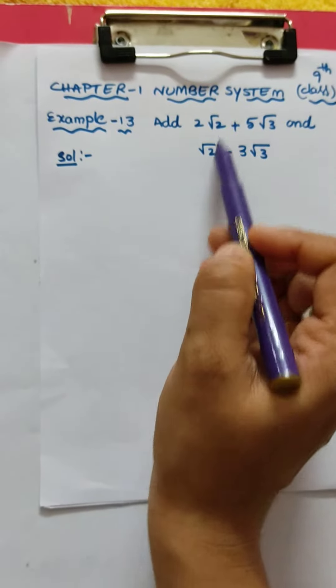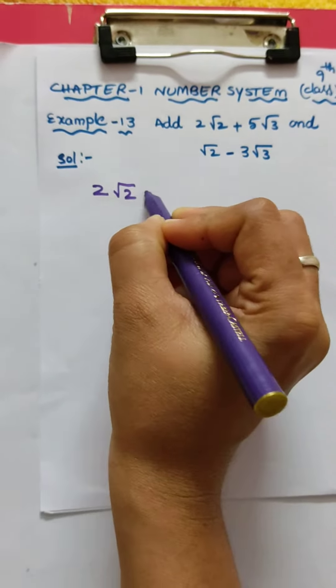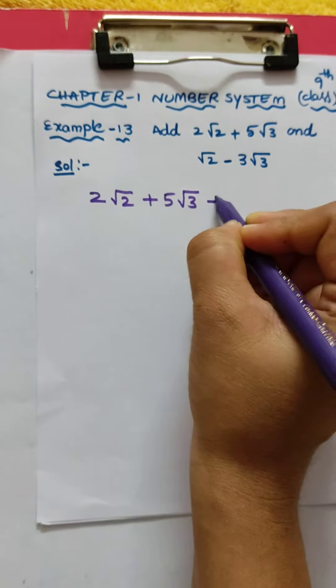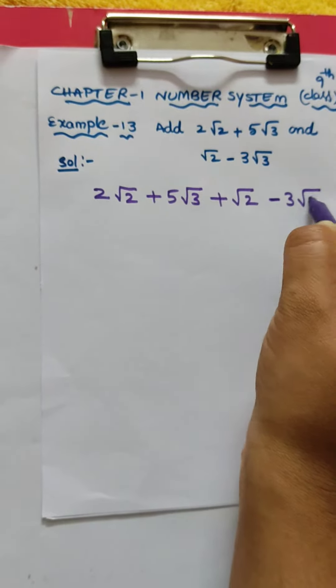Solution: We should add both, so 2√2 + 5√3 + √2 - 3√3.